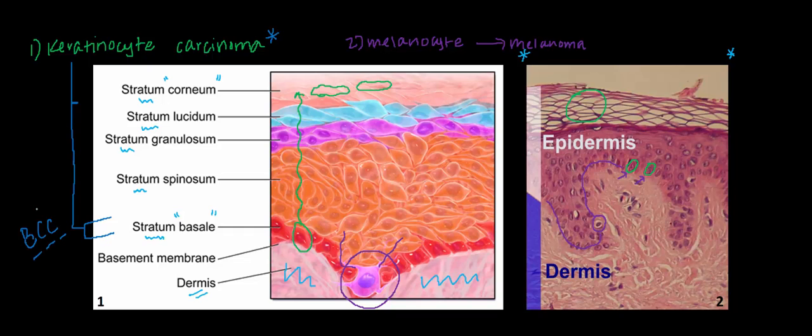On the other hand, if keratinocyte carcinoma arises from any of the keratinocytes above the basal cell layer, so the stratum granulosum, spinosum, etc., we call it a squamous cell carcinoma, or SCC for short.